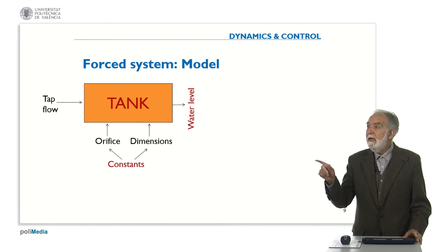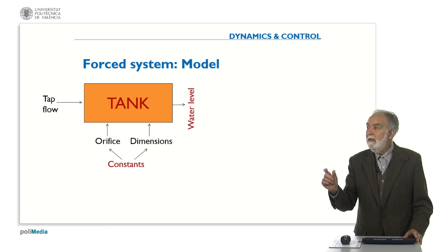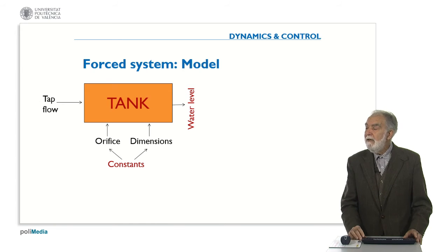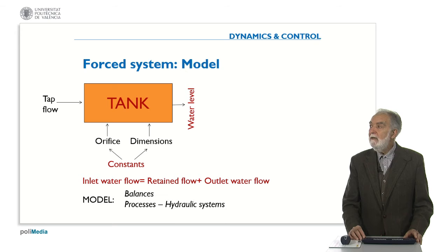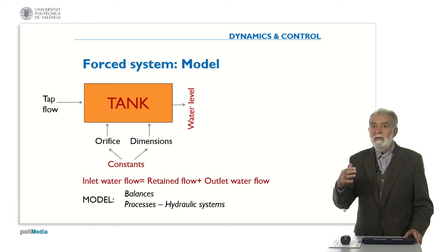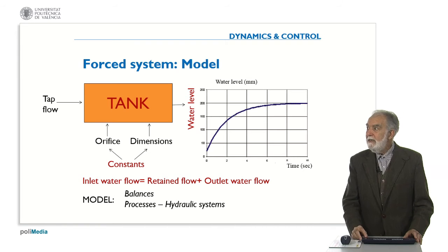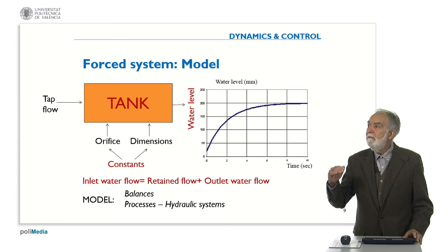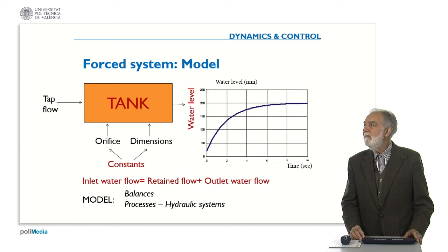Going again to the block diagram, there is the input, which is the flow in the tap. There are some inputs which are the number and size of the orifices and the dimension of the tank, which are constant. And there is the water level, which is the variable we are interested in. We make a hydraulic balance: the inlet water flow is equal to the outlet water flow plus the water which is retained inside. If we open the tap, the level of the tank will raise until the outlet through the orifice is equal to the inlet through the tap, and we will reach a similar upper level.